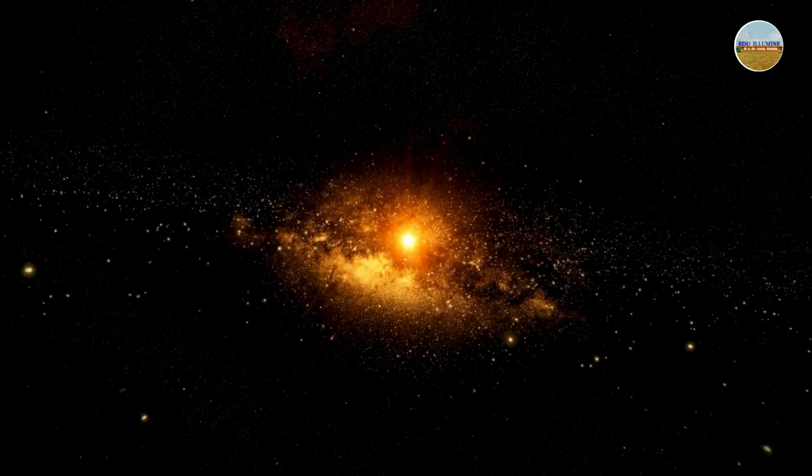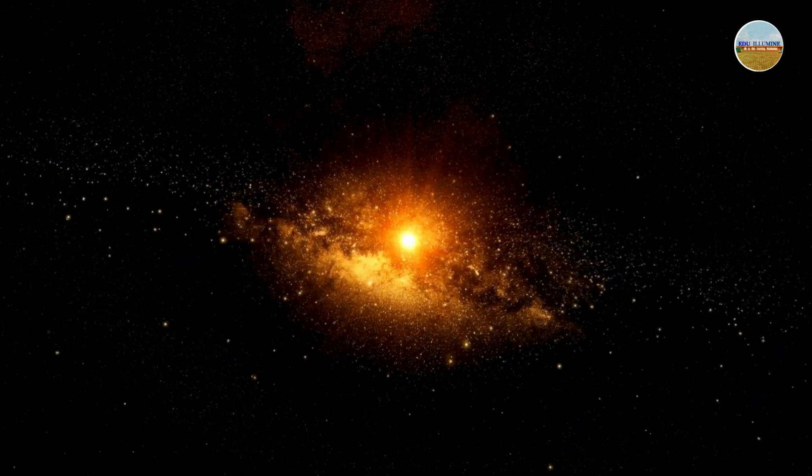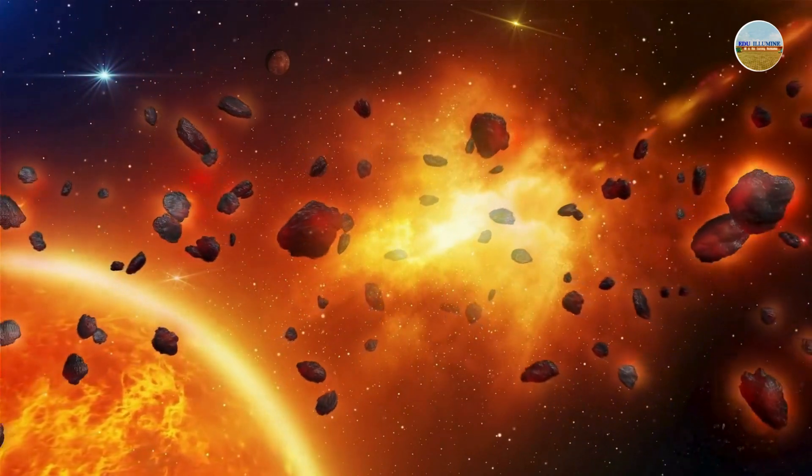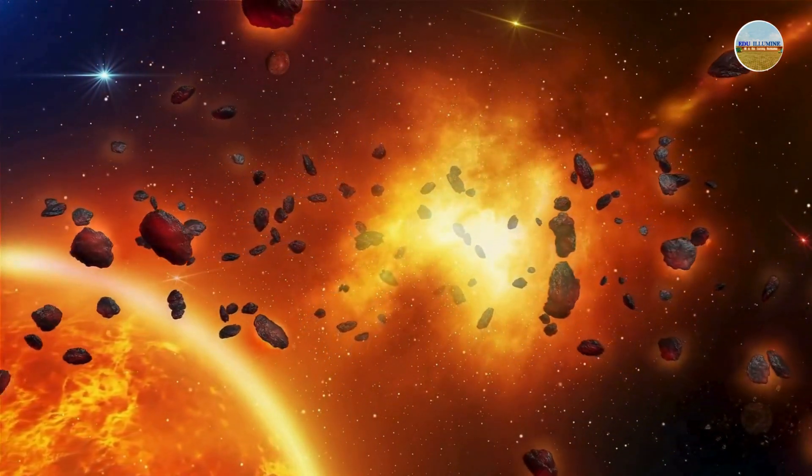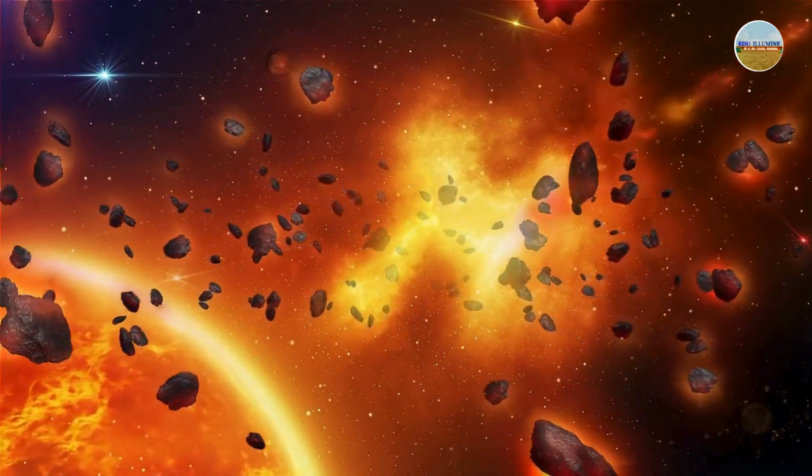The sun was born first and it became the boss of the whole solar system. Around the sun, tiny rocks and gas were bumping into each other. They stuck together, getting bigger and bigger, until they turned into planets,